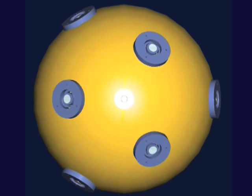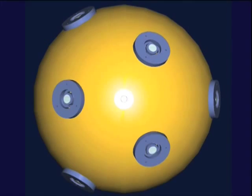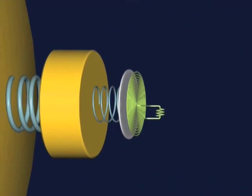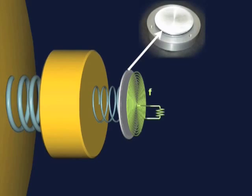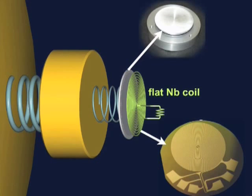You have to cool down this sphere to about 10 to 20 millikelvin. The antenna is spherical. It looks to all directions with the same intensity. Six sensors you have there to measure this very small displacement.